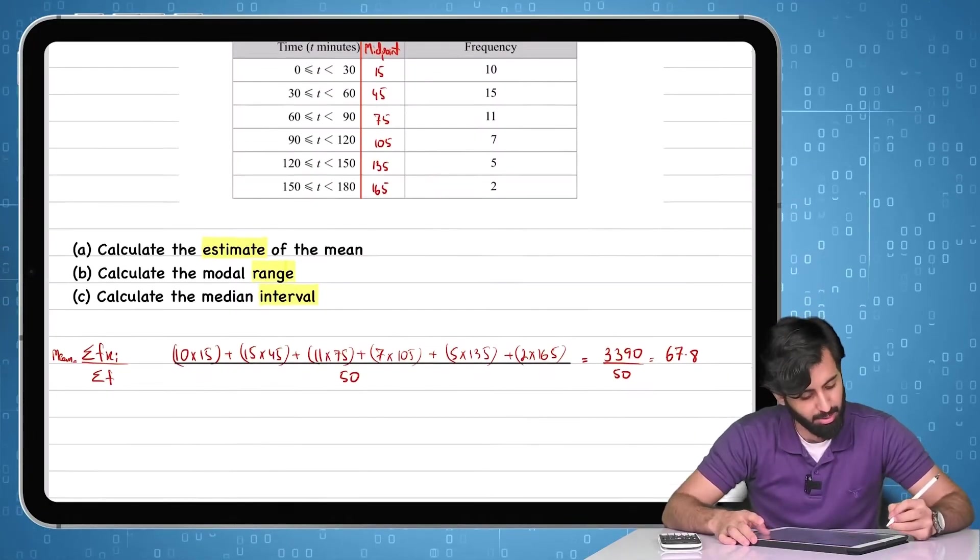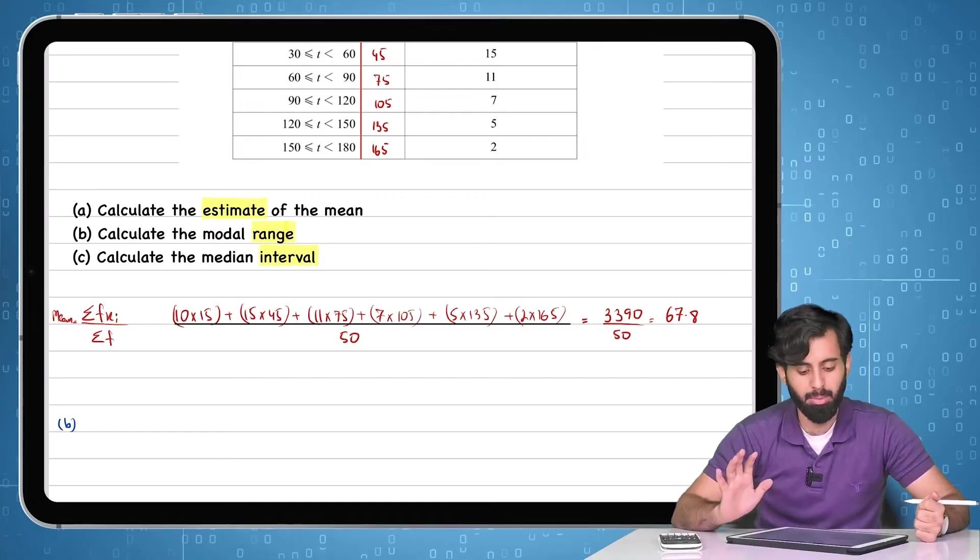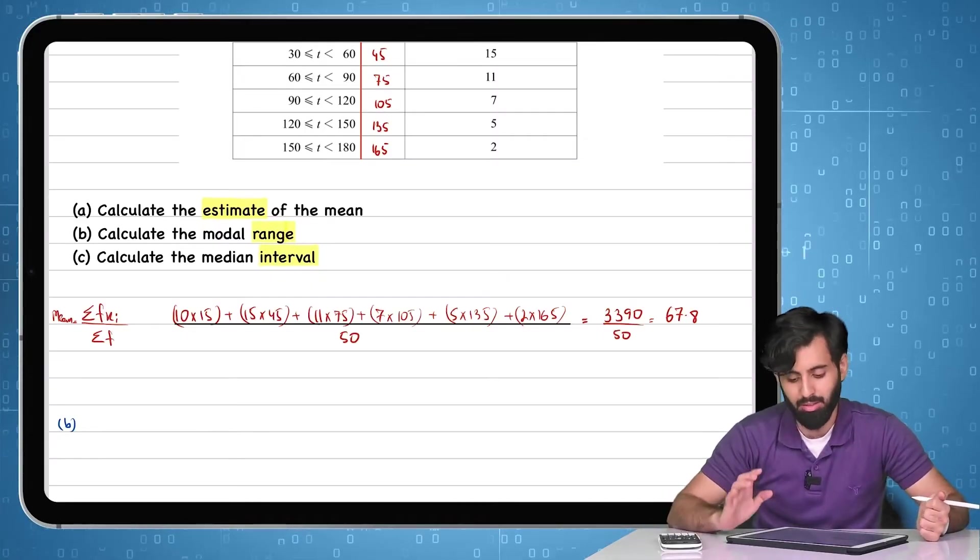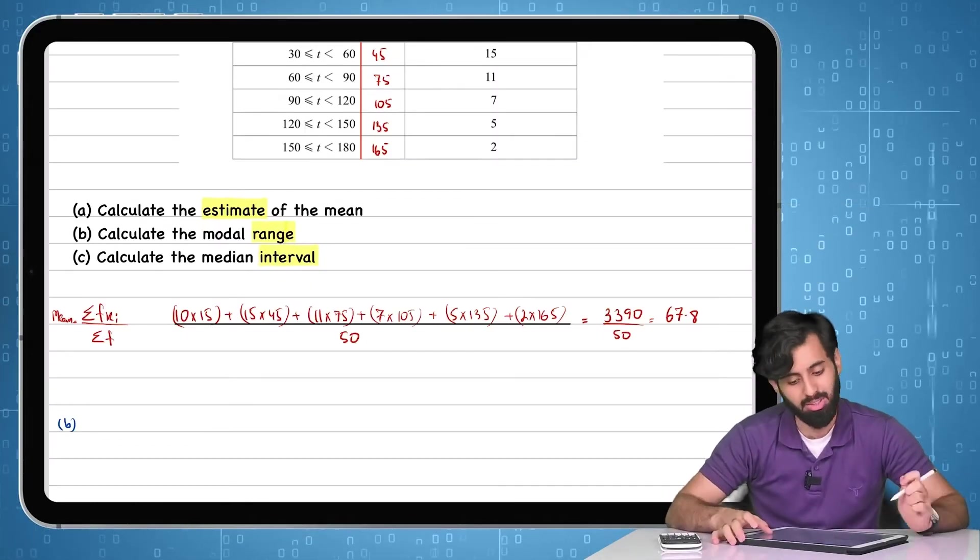Now let's do part B and part C. And let me show you something that's different from before. In part B, the question is not asking you to find the mode. In fact, it's asking you to find out the modal range. What does that mean?